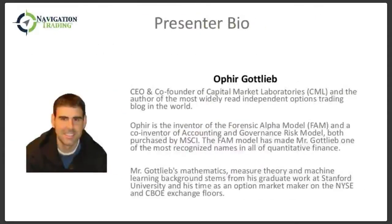With that, we'll get started. Back to Ophir — just to give you a quick overview: he's the CEO and co-founder of CML. He's also the inventor of the forensic alpha model and the accounting and governance risk model, both of which were sold to MSCI. He's been on Bloomberg, CNBC, Yahoo Finance — you name it. He's very active on Twitter, so if you're on Twitter, he's a great follow, constantly posting really helpful information.